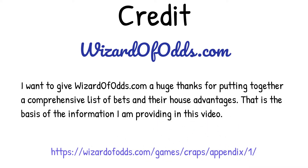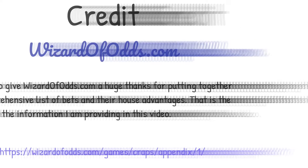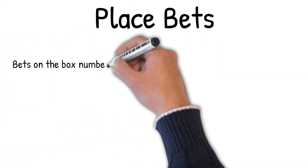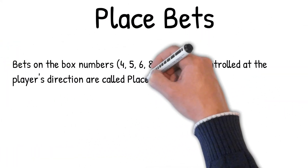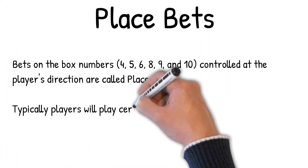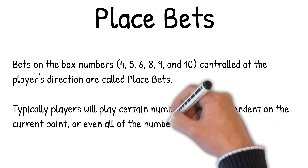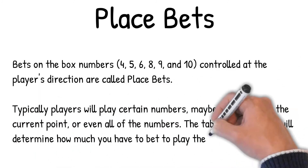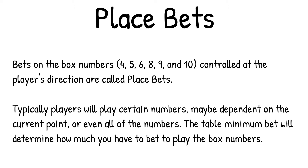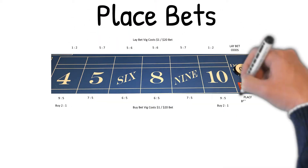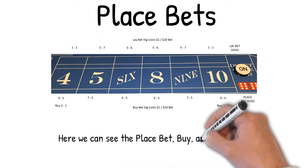Place bets — bets on the box numbers four, five, six, eight, nine, and ten — controlled at the player's direction are called place bets. Typically players will play certain numbers, which may be dependent on their current point, or even all of the numbers. The table minimum bet will determine how much you have to bet to play the box numbers. Here we can see the place bet, buy, and lay odds.